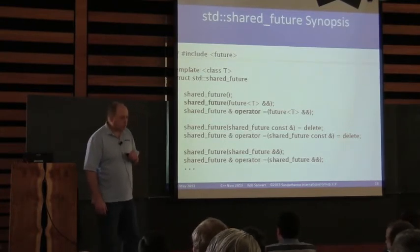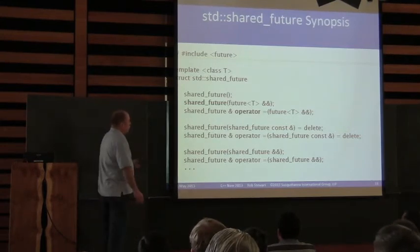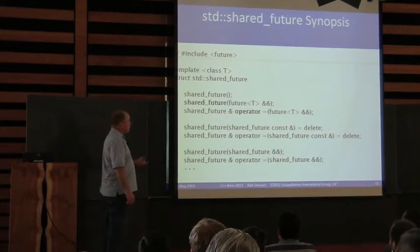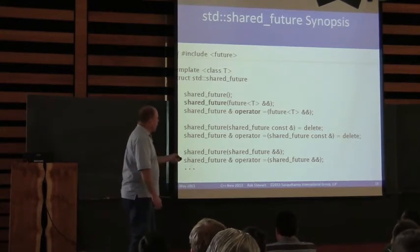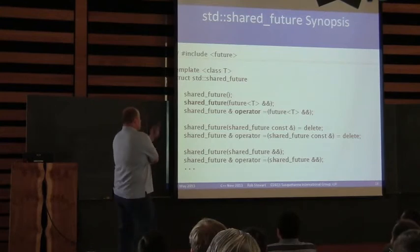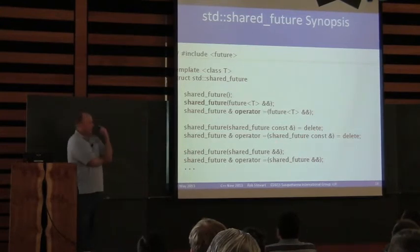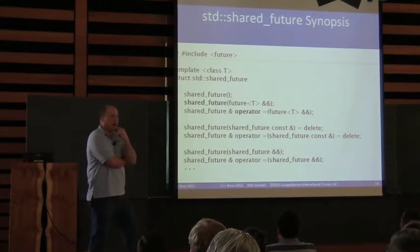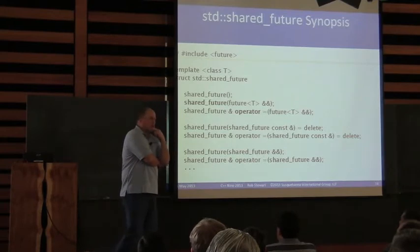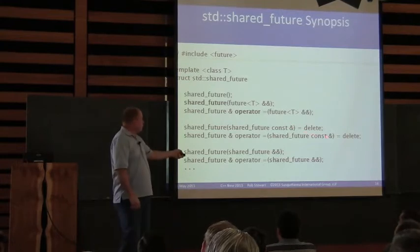How do you make more than one shared_future? It turns out I made a mistake on the slide — shared_future is both movable and copyable. Sorry about that typo.